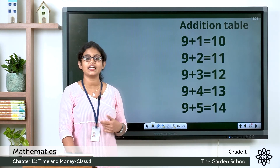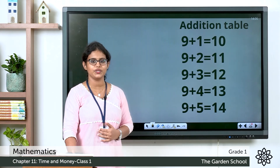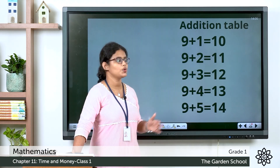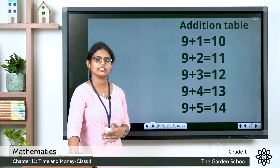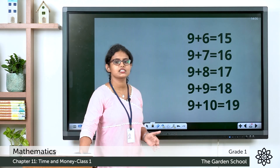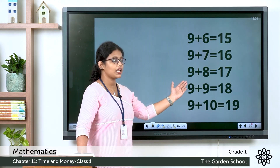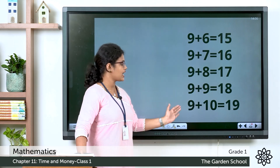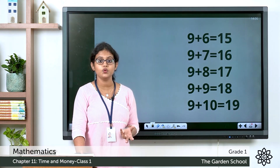In the last class we learnt the addition table of 8. Now let's learn the addition table of 9 — repeat along with me. 9+1=10, 9+2=11, 9+3=12, 9+4=13, 9+5=14, 9+6=15, 9+7=16, 9+8=17, 9+9=18, 9+10=19. Repeat this 2 or 3 times — it will help you in your calculations.